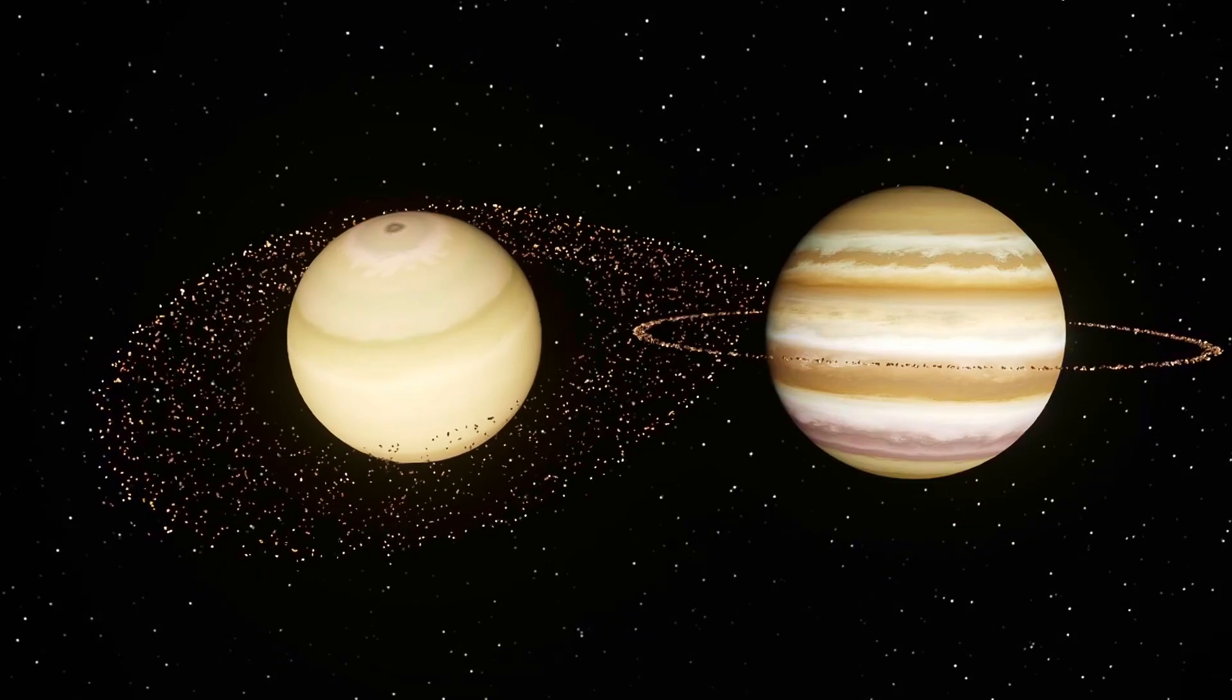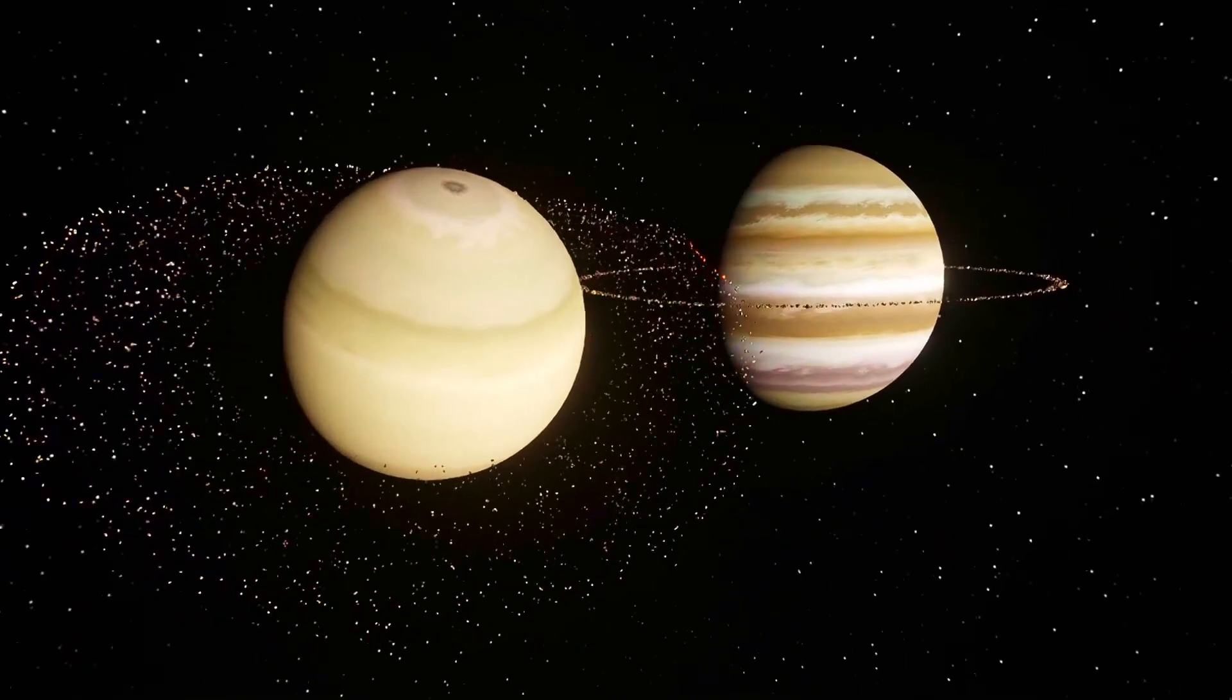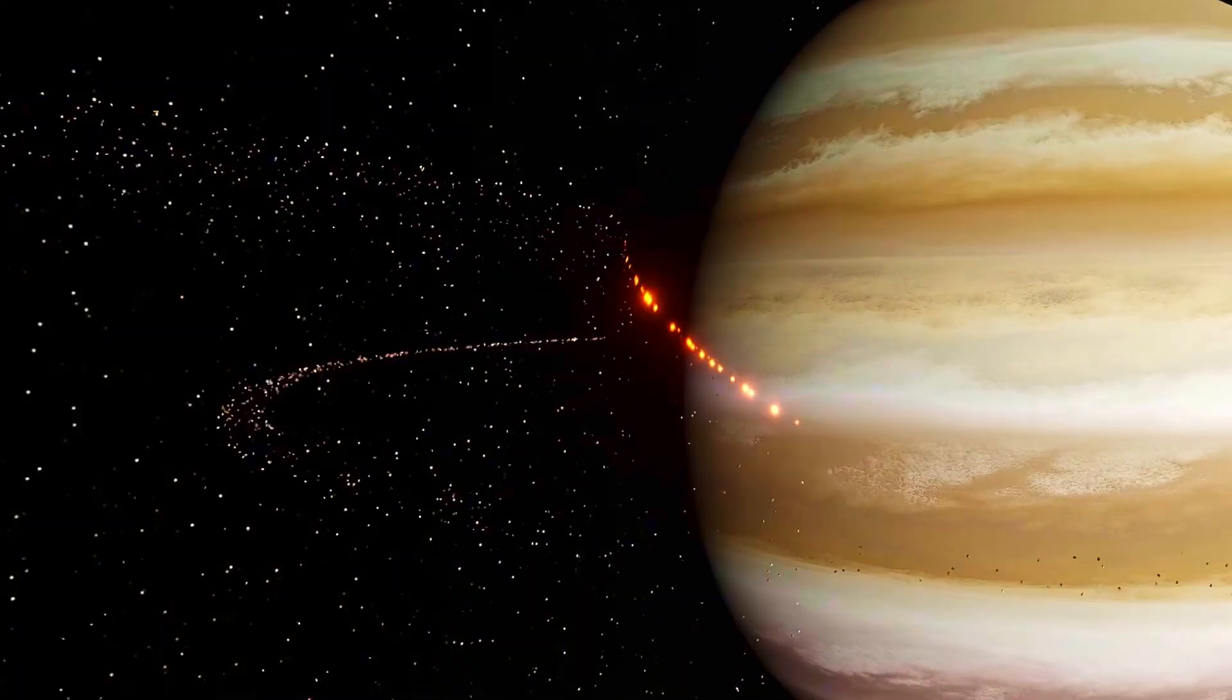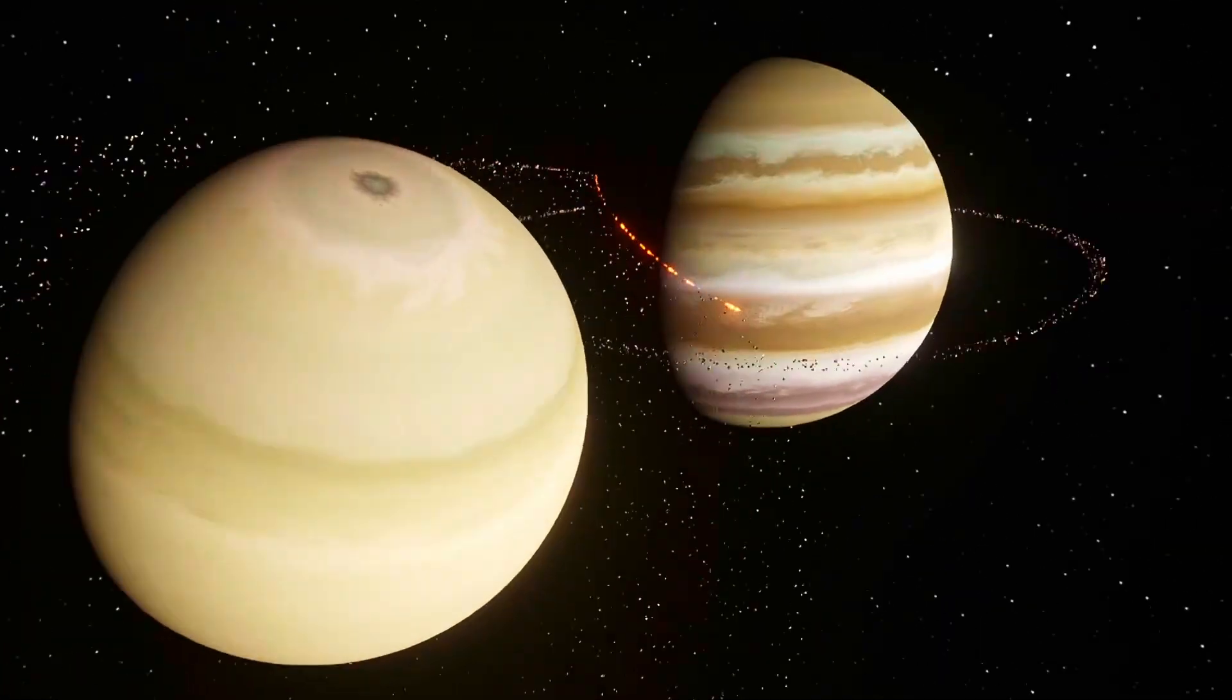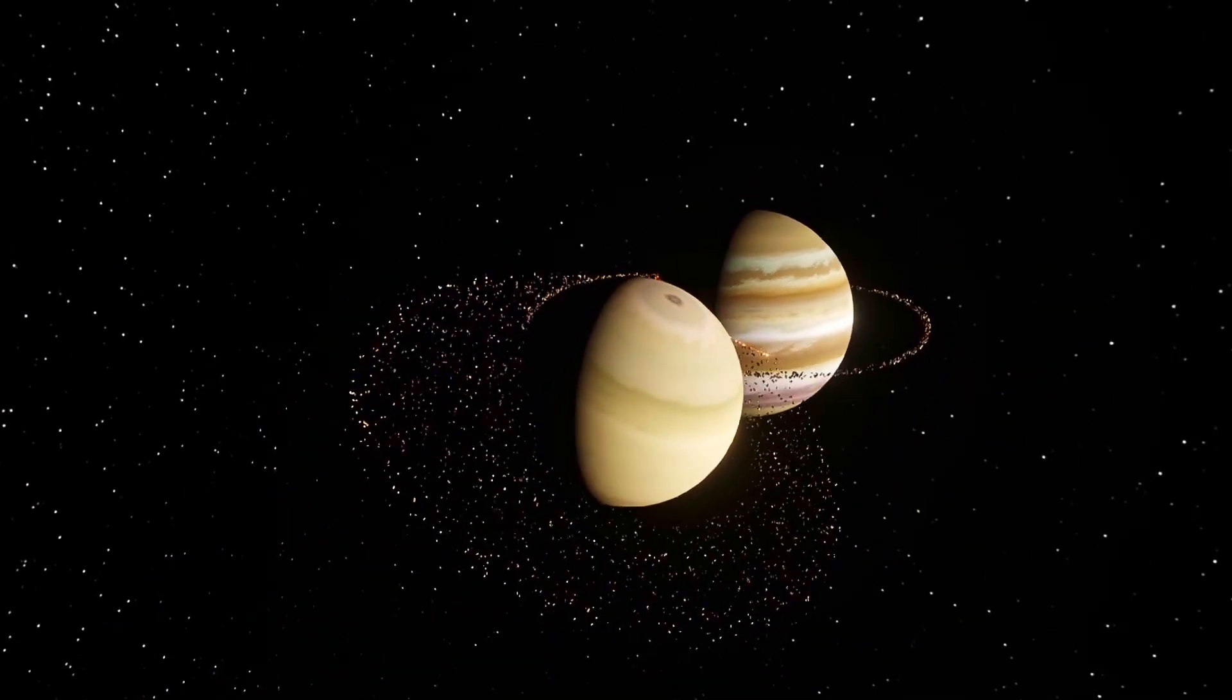The first impact wouldn't be the planets, it would be the rings. Saturn's rings and Jupiter's faint ring system would smash together at incredible speeds, creating a cloud of shattered ice and dust.